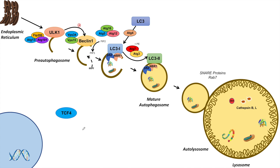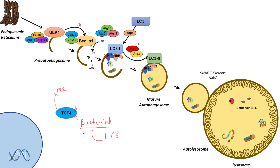The next repressor of macroautophagy is TCF4, which is regulated by beta-catenin. When beta-catenin is bound to TCF4, TCF4 is able to suppress P62. However, when LC3 binds to beta-catenin, it leads to its proteasomal degradation, so beta-catenin gets suppressed, leading to a suppression of TCF4 and therefore a suppression of its inhibition on P62.